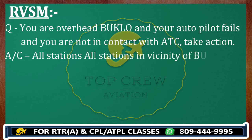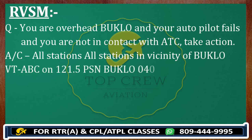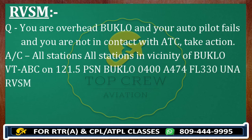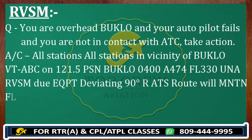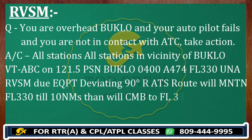Continuing the call: "Boklo 0400, Alpha 474, flight level 330, unable RVSM due equipment. Not in contact with ATC — deviating 90 degrees right of ATS route. Will maintain flight level 330 for 1.0 nautical miles, then climb to flight level 335. Flying offset 1.5 nautical miles. All external lights are on. Keep a lookout."